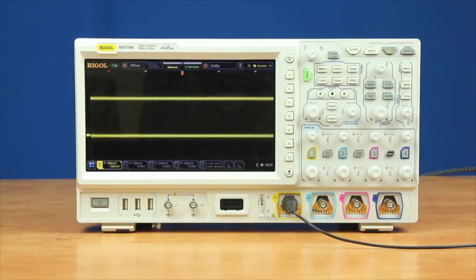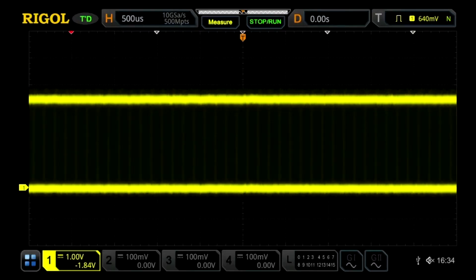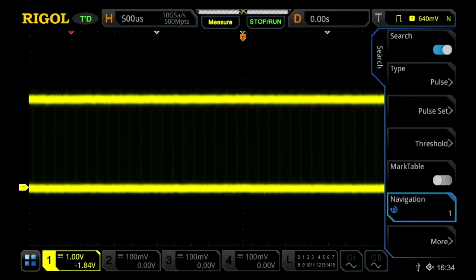Looking at the same signal on the Regal, the additional memory depth gives us a higher sample rate and more signal fidelity. We can use the same trigger type and search type looking at a pulse width.